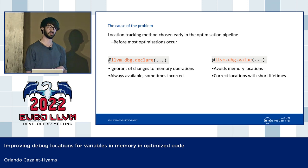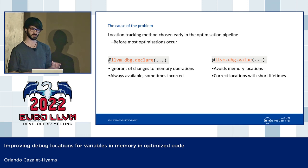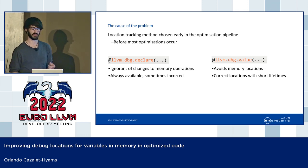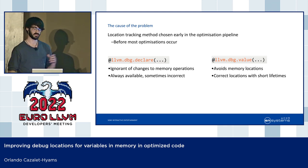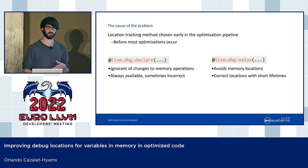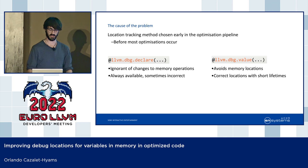When we use debug values, we get around the problem by avoiding talking about memory locations where possible — we just specify the value of the variable where it changes in the program. This generally leads to correct locations, but they tend to have short lifetimes because these get lowered to register locations. The compiler tries to limit the lifetime of values in registers, so these don't cover much of the program. It would be nice to use the memory location if we could prove that the value is still live there, but we can't do that with debug values.